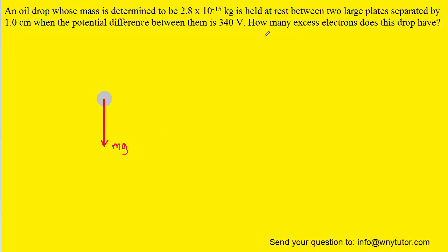Now the question notes that this oil drop is held at rest between two large plates. So because there is a downward gravitational force and the oil drop is held at rest, there must be another force that's acting in the opposite direction to balance out this gravitational force. So we can determine that there is some upward force whose magnitude is exactly equal to mg.